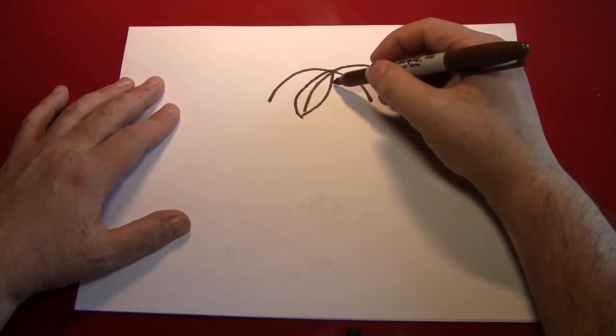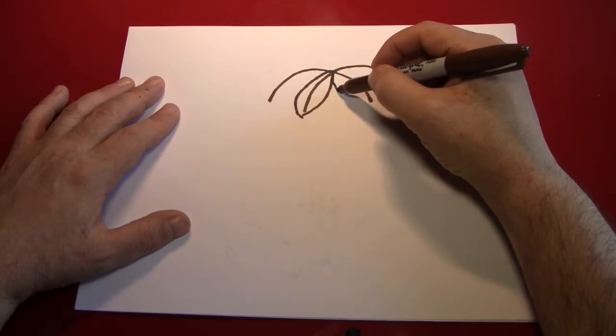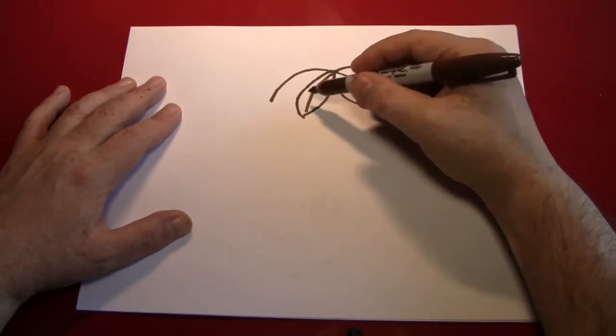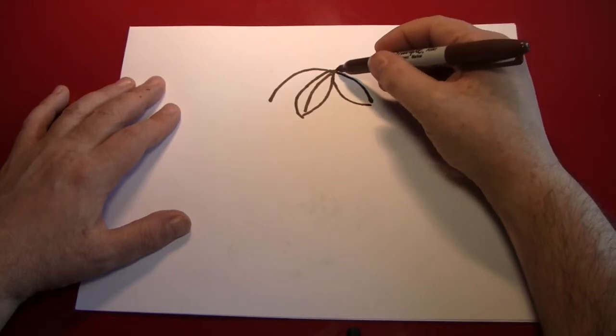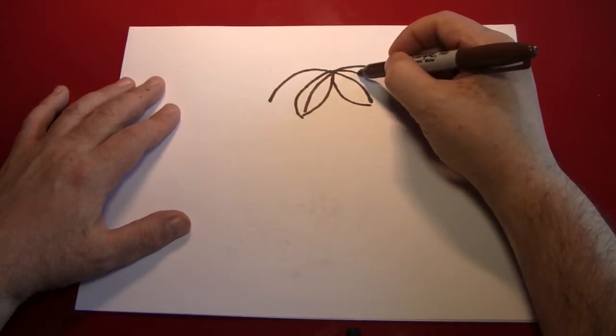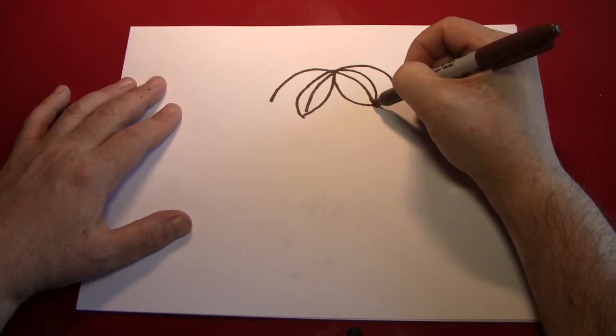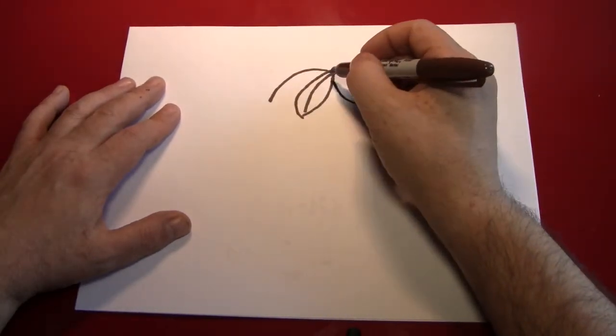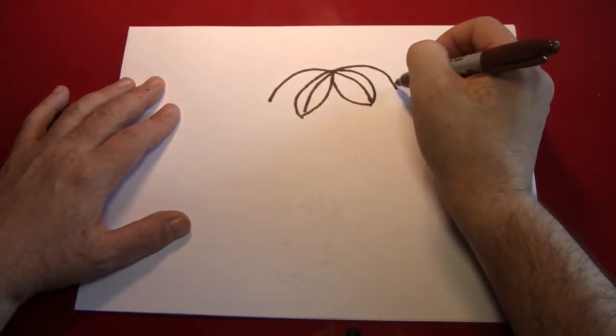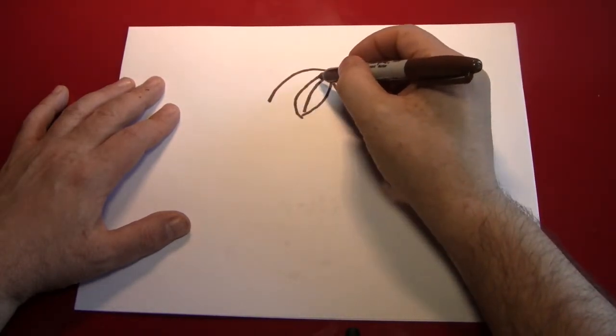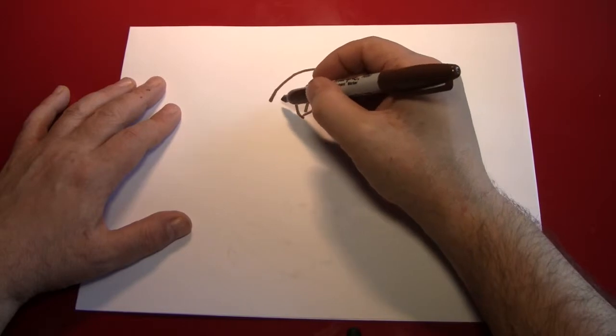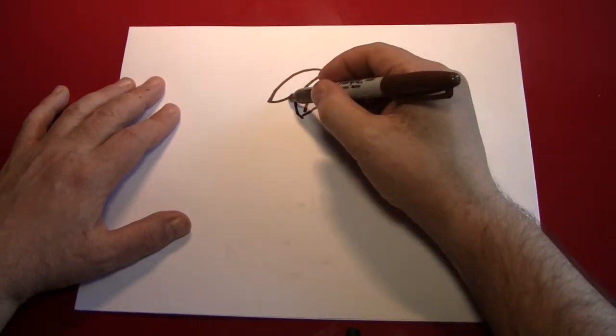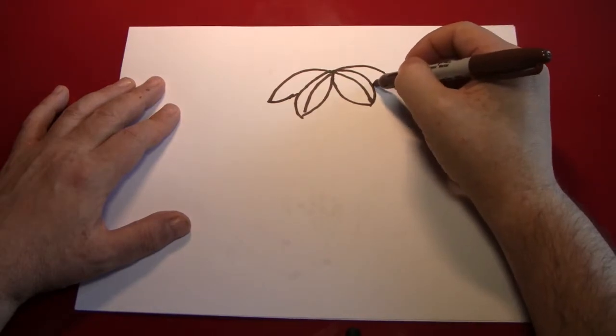Don't go all the way to the converging point though. Start a little bit up here and that'll give it the illusion that it's underneath the other leaf. There you go. Now these leaves are obviously in the back so they're not going to be seen completely. So just bring them in to where they meet the leaves we've already drawn.